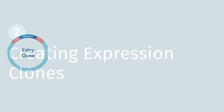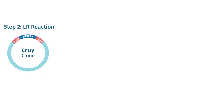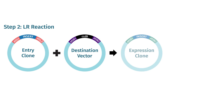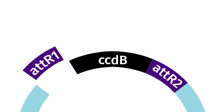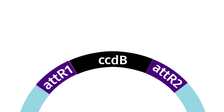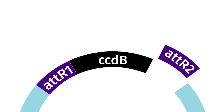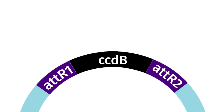The next step in gateway cloning is to create the expression clone by combining the entry clone with a destination vector. All destination vectors include AT-L1 and AT-L2 sites and are compatible with standard gateway entry clones, regardless of which method produced the clones.